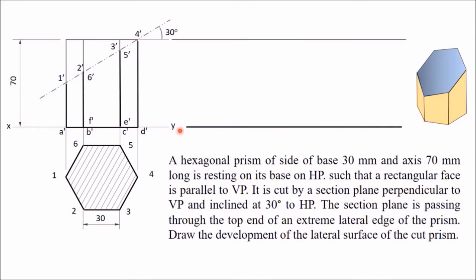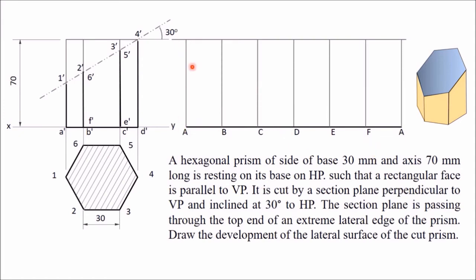For the development, draw two horizontal lines from the two top ends. On the bottom line, start from point A and mark off equal distances of 30 mm, dividing the strip into six equal parts: 1, 2, 3, 4, 5, 6. Starting from A, it ends with A again after six divisions. From all these points draw vertical lines joining the top line — these represent all the edges of the prism in the uncut position. Now find where each edge is cut. Edge from A is cut at point 1', so draw a horizontal line from 1' to locate point 1 on that edge.